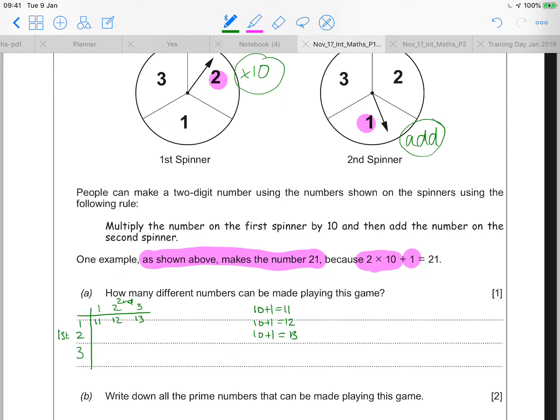So how many different numbers can be made playing this game? The answer will be nine. And I'm just going to finish filling this in. So a two and a one, three and a one, two and a two, three and a two, two and a three, three and a three. And if I'd done it the other way, I'd now have a 20 plus one, 20 plus two, 20 plus three, 30 plus one, 30 plus two, 30 plus three. And whichever way I thought about the question, I can see that I've got nine possible answers.